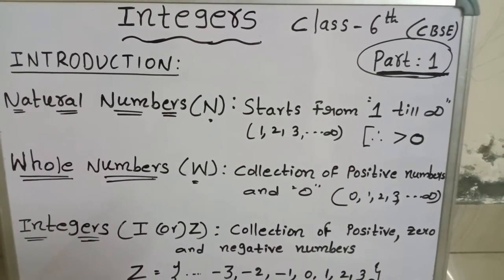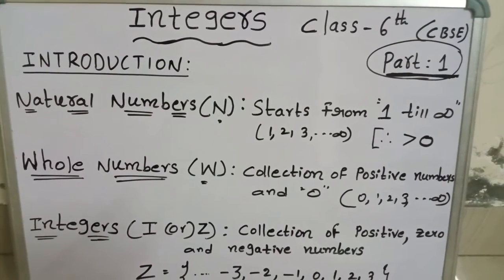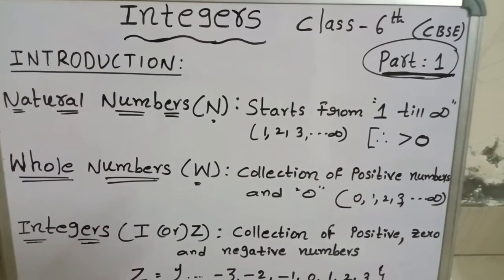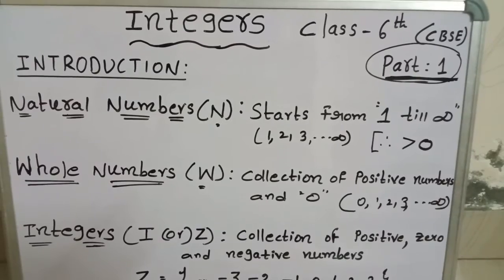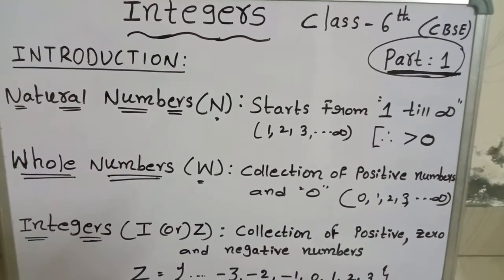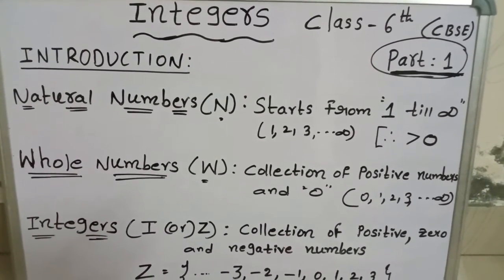also called counting numbers. When we need to count objects or things, we use numbers. For example, comparing the quantity of objects or things and knowing the temperature of climates in different ways, we use natural numbers. The set of natural numbers starts from 1 to infinity. 1 is the smallest natural number and there is